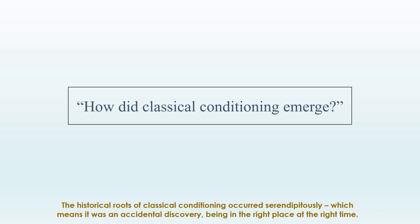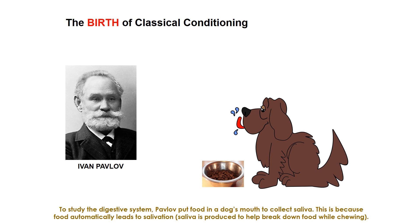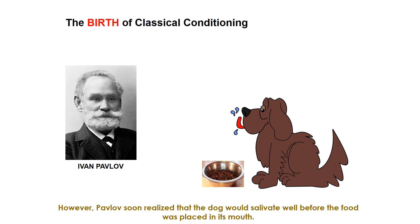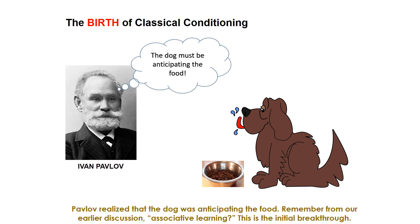The historical roots of classical conditioning occurred serendipitously — it was an accidental discovery, being in the right place at the right time. Ivan Pavlov was a Russian physiologist interested in studying the digestive system of dogs. To study it, Pavlov put food in a dog's mouth to collect saliva, because food automatically leads to salivation. However, Pavlov soon realized that the dog would salivate well before the food was placed in its mouth — just looking at the food, the food bowl, or even hearing people walk into the room. Pavlov realized the dog was anticipating the food, which was the initial breakthrough in associative learning.